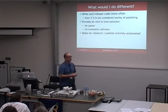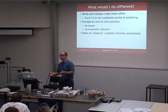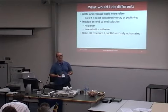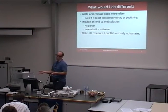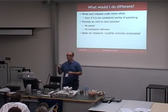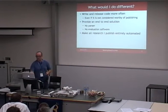What would I do differently? If I was starting now instead of two years ago, I'd write and release code more often — do more releases. I'd implement stuff that may not even be worthy of publication and still release it as part of the project. I'd provide an end-to-end solution — at the moment my project has no parser, so even though we're focusing on the information retrieval side, you can't parse documents directly. I haven't included any evaluation software either, so if you've got a different algorithm you want to test against mine, you have to implement all that yourself. I'd also like to make all my research entirely automated, so instead of reading the paper and seeing the results, you can download the software, run the experiment, and see the results yourself. Hopefully I'll be able to finish all these by the end of my PhD.